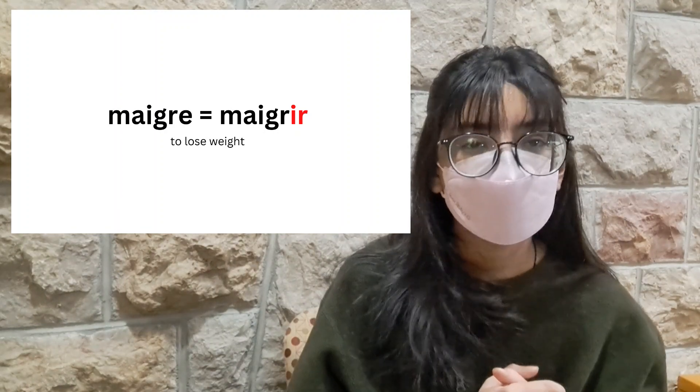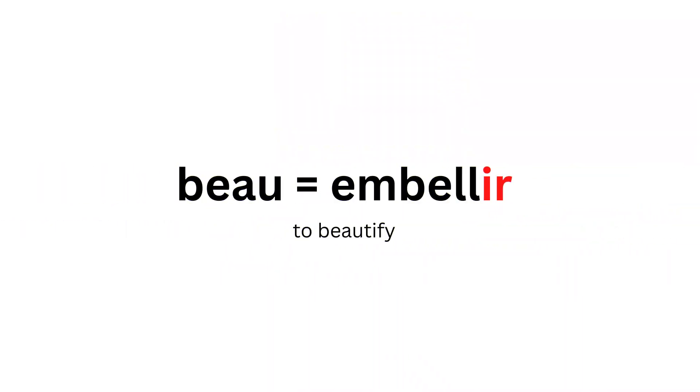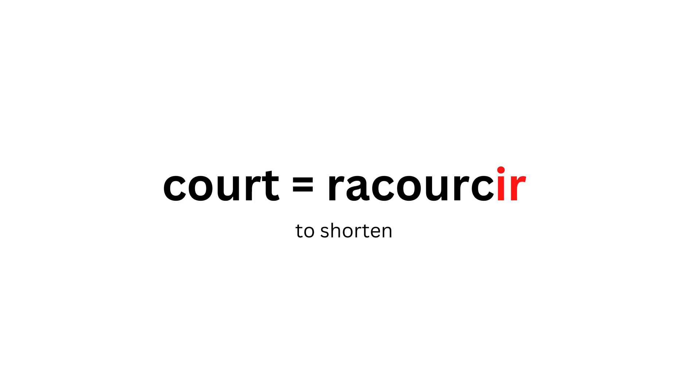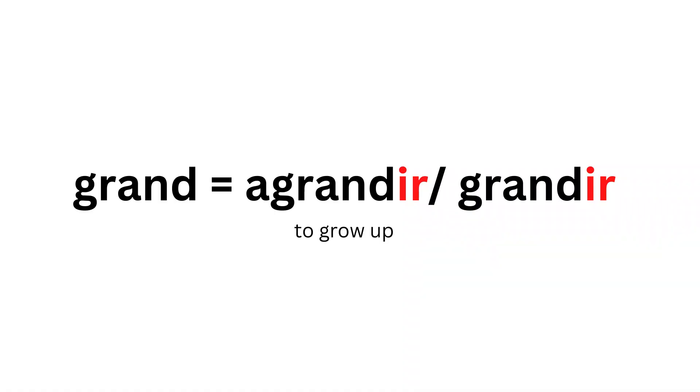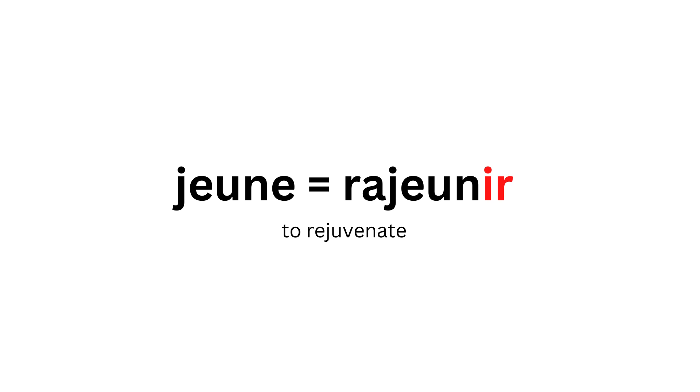Another example: beau means to be beautiful, and embellir means to beautify — so if something has become more beautiful, we say embellir. Next, court means short, and raccourcir means to shorten. Dur means to be hard or strong, and durcir means to harden. Then we have grand and grandir, and gros and grossir. And then jeune becomes rajeunir — that's a very interesting verb because we add the prefix ra- before the adjective jeune, and it formulates rajeunir, meaning to rejuvenate or to become younger, like going backwards in age.